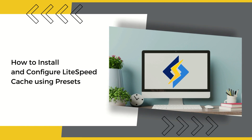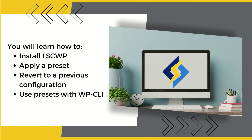Presets are the easiest way to optimize your WordPress site using the LiteSpeed Cache plugin. Each preset contains a pre-tuned set of options which can be used with LiteSpeed Cache to optimize any WordPress site. You can configure your ideal level of optimization with just a few clicks. In this tutorial we will show you how to install and activate the LiteSpeed Cache plugin, how to apply a preset, how to revert back to a previous configuration, and how to use presets with the WordPress command line interface. We'll also give you the answers to a few common questions.